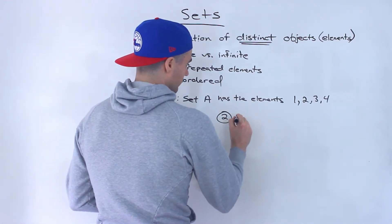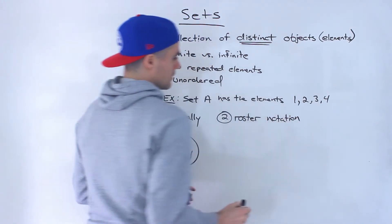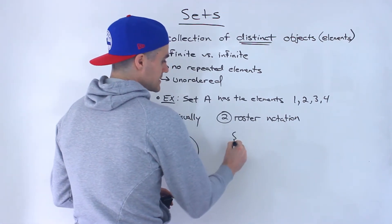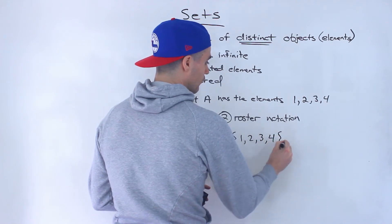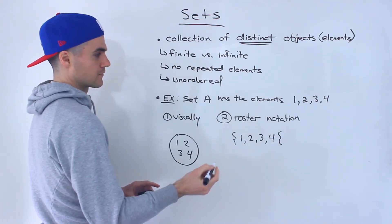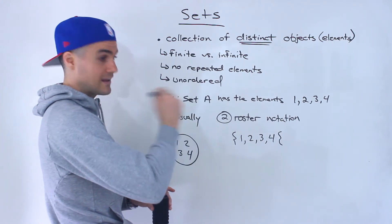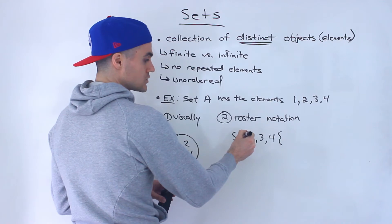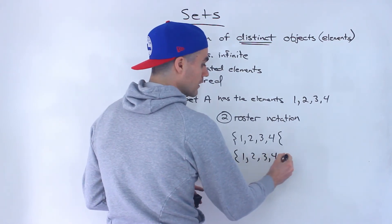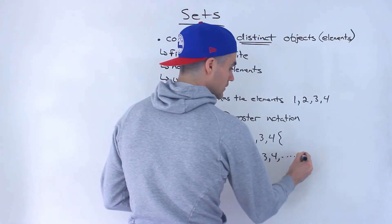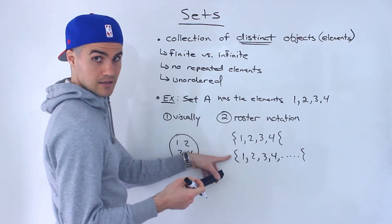Another way to show sets is with roster notation. You'll see the elements listed in curly brackets — so for set A it would be {1, 2, 3, 4}. You can also use roster notation for infinite sets. For example, all integers greater than or equal to 1 would be written as {1, 2, 3, 4, ...} with dots to show it continues to infinity.